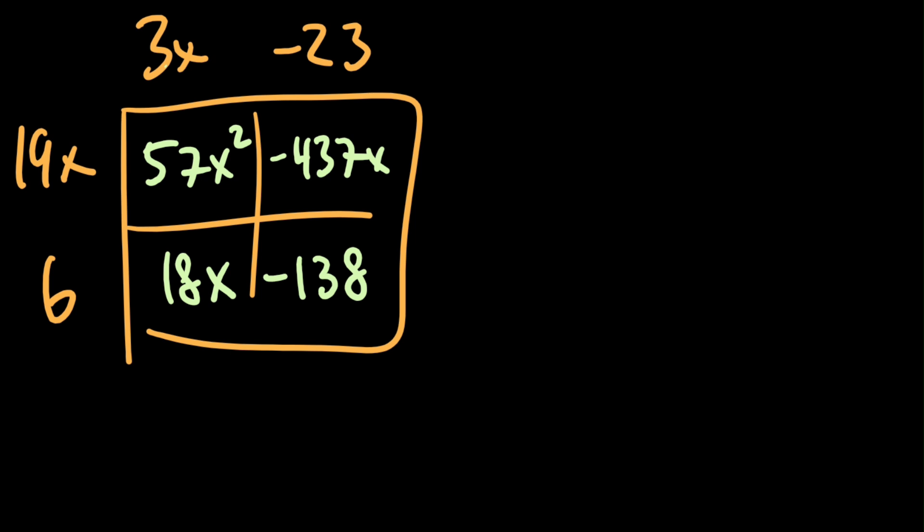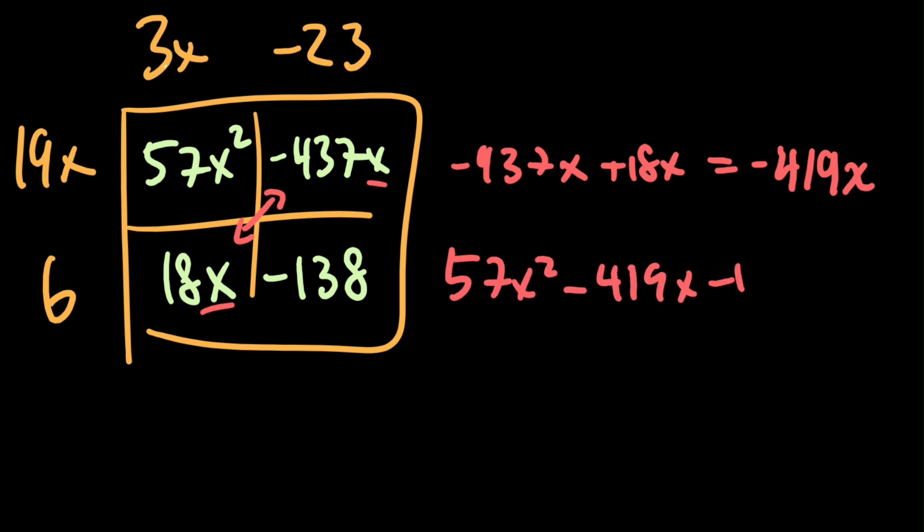Anyway, what we're going to do now is combine like terms, so we see there's an x here and an x here, so we get -437x + 18x, that's going to give us -419x. So we have our final equation here, 57x² - 419x - 138.